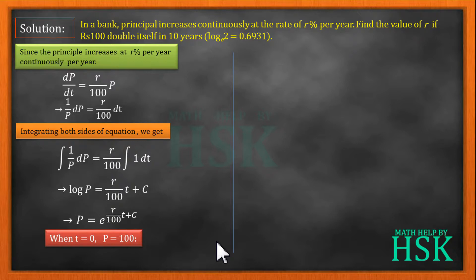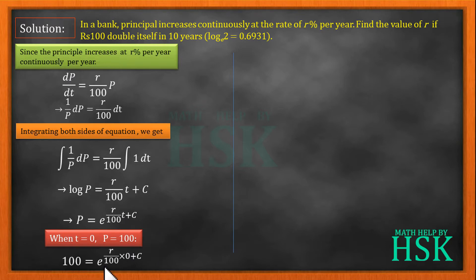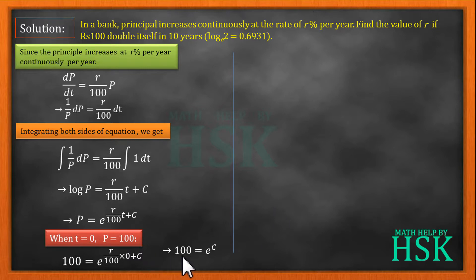Placing t = 0 and P = 100 into the equation, we get 100 = e to the power of (r/100 · 0 + c), which gives 100 = e to the power of c. So e^c = 100.